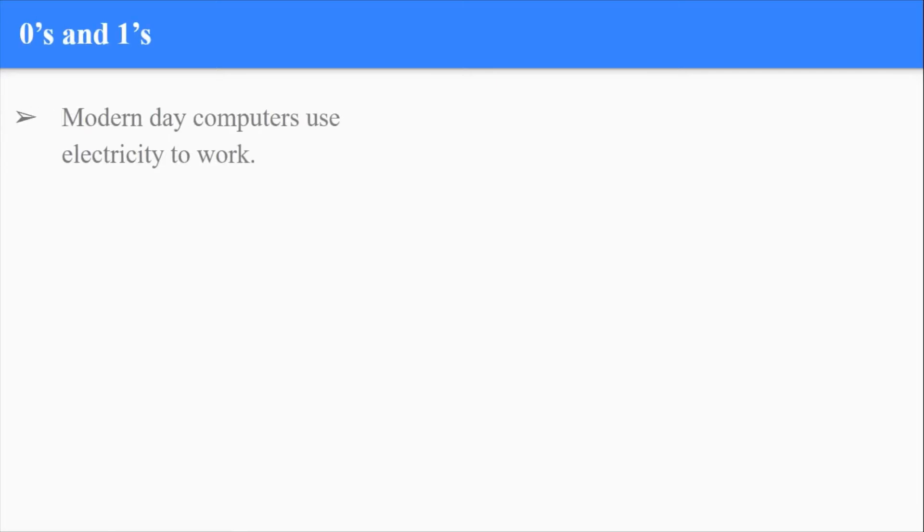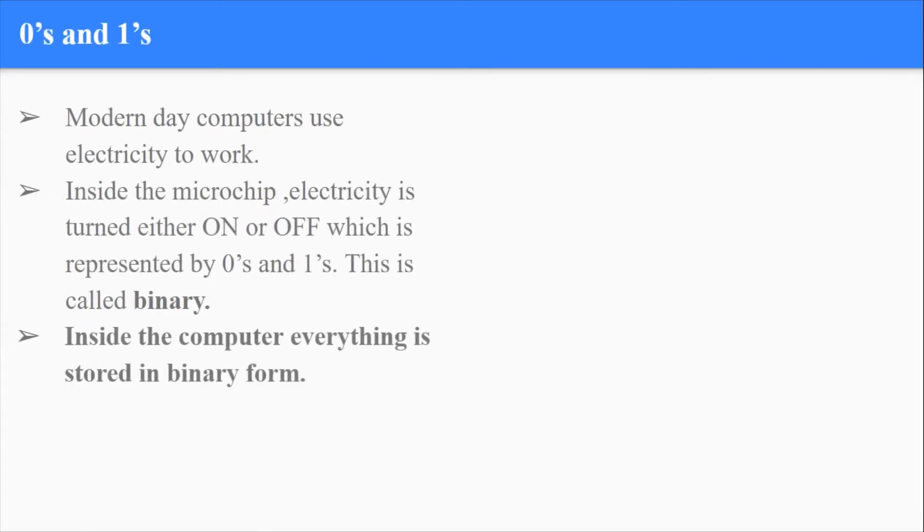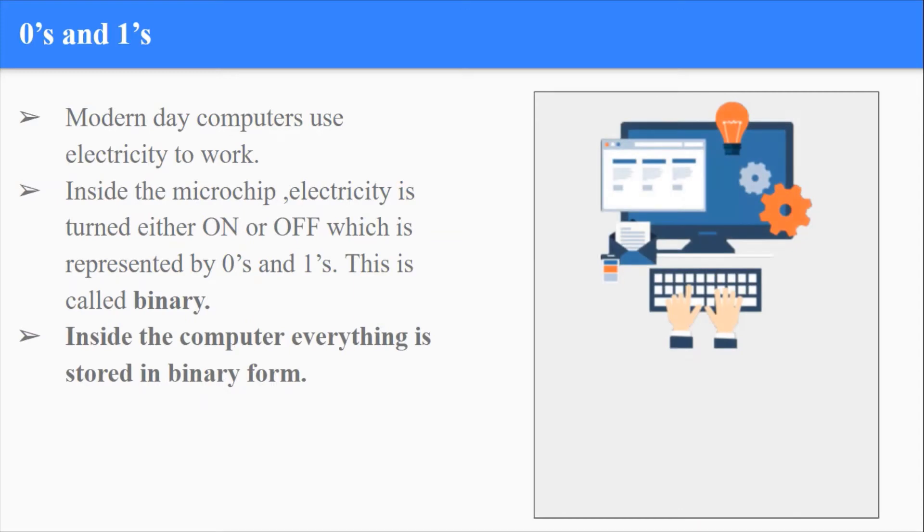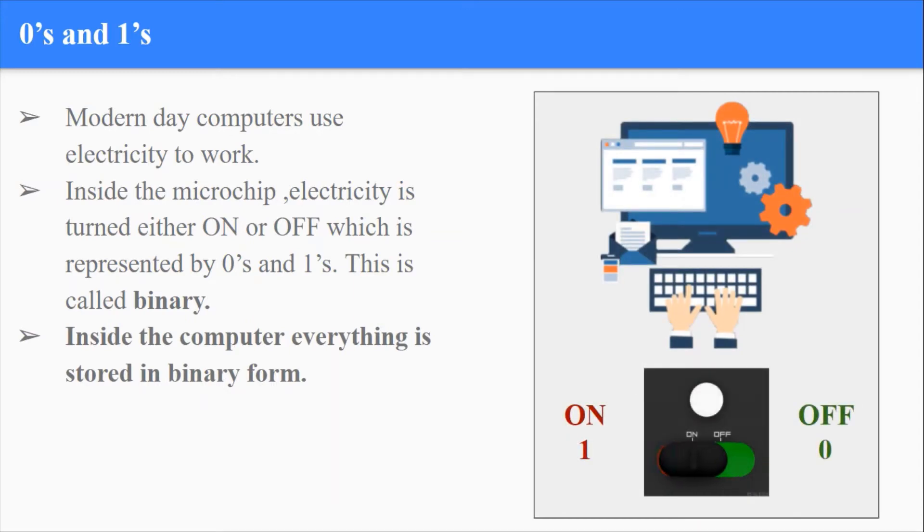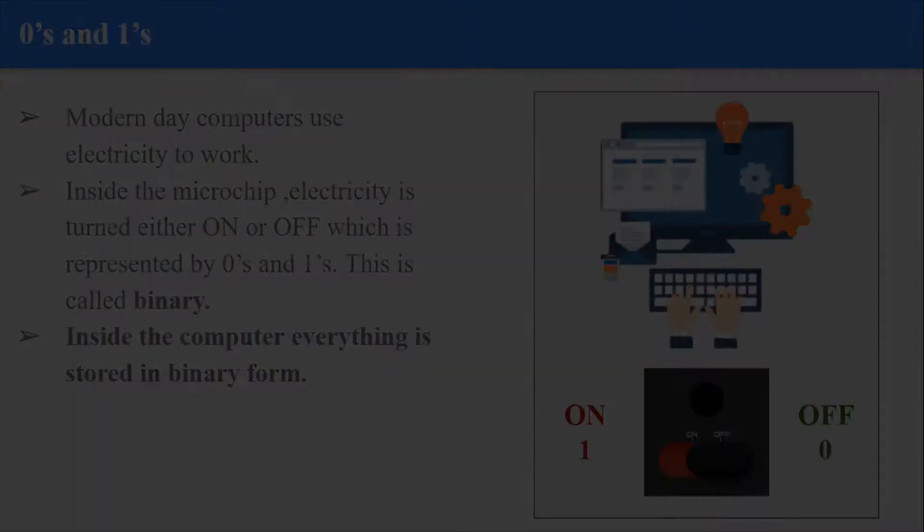Modern day computers use electricity to work. Inside the microchip, the electronic switch or transistor is either turned on or off. An on state is represented by one and an off state is represented by zero. This is called binary. Inside the computer, everything is stored in binary form.